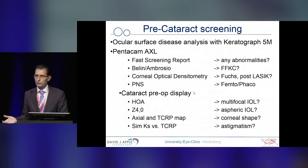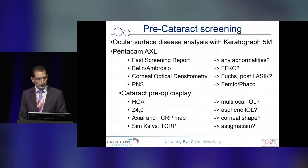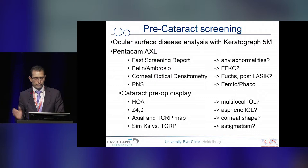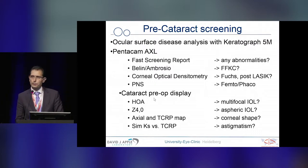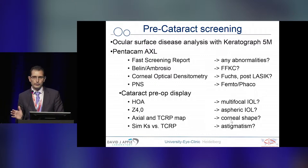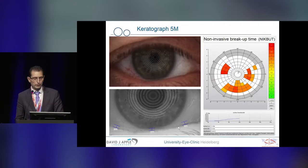We calculate the approach based on whether we are using a femtosecond laser or regular standard phacoemulsification. Then we use the cataract preoperative display — as seen in Professor Conan's presentation — dealing with higher-order aberrations, asphericity, and the actual and total corneal refractive power map to analyze corneal shape with regard to toric IOLs, and comparing SIMK versus total corneal refractive power to correct astigmatism values.